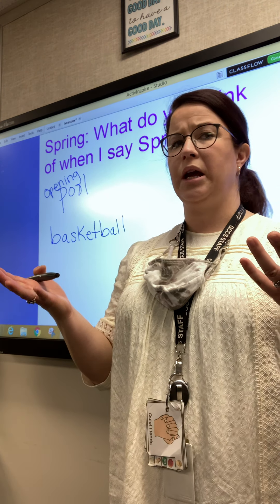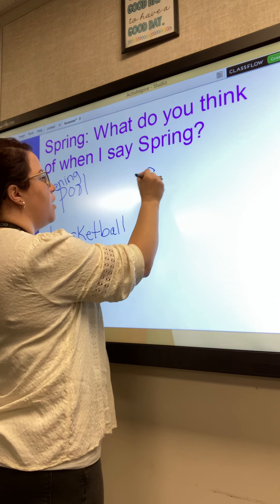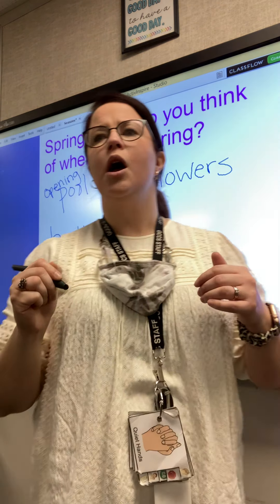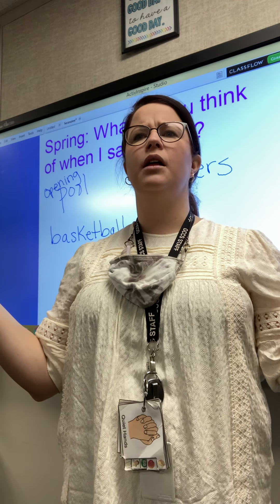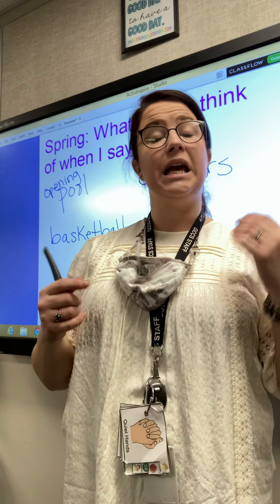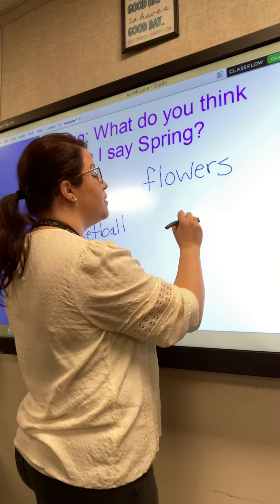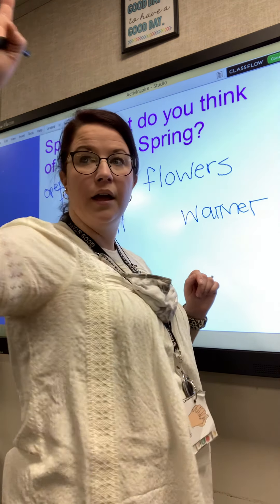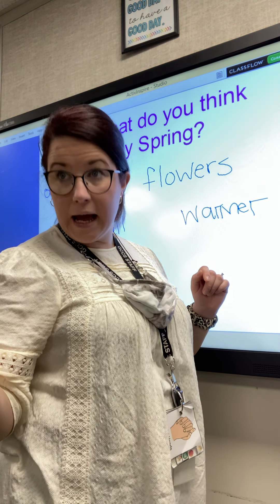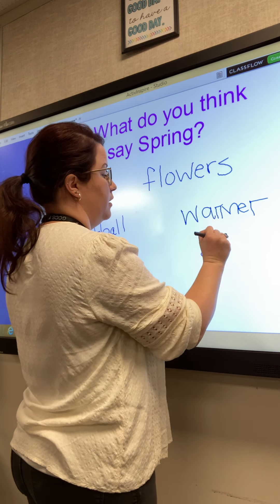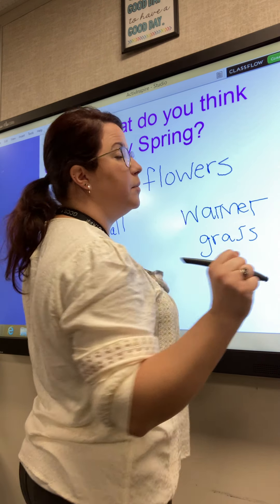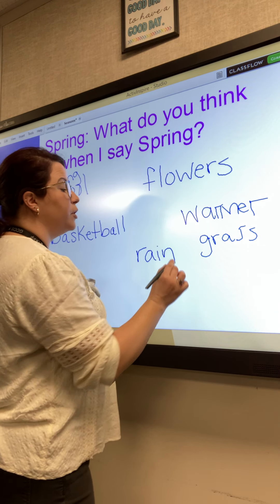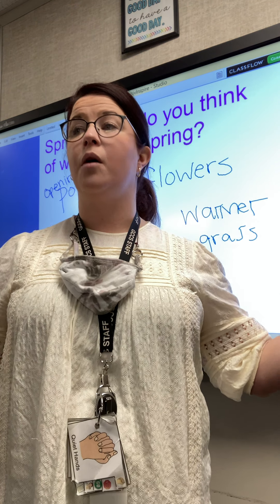What grows out of the ground during the spring? Flowers. Flowers start growing during the springtime. What's the weather like outside in springtime? It starts to get warmer. But with the warmer weather also comes a lot of — grass grows. And what do the flowers and the grass need to be able to grow? They need rain. There's usually lots of rain in the spring because everything is starting to grow.